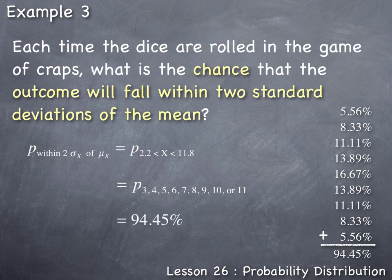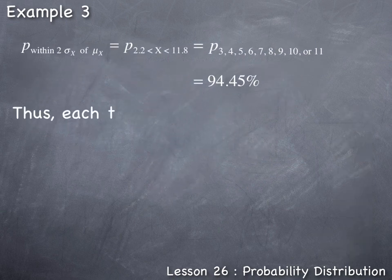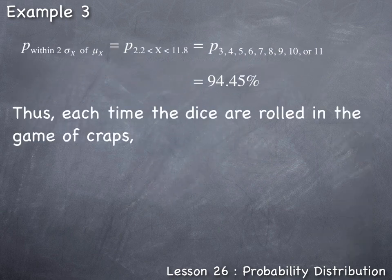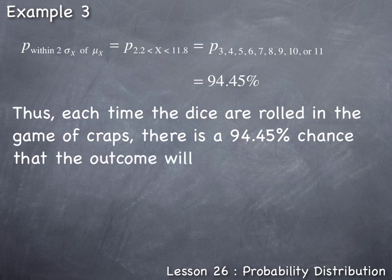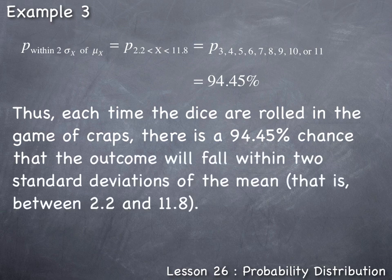Thus, each time the dice are rolled in the game of craps, there is a 94.45% chance that the outcome will fall within two standard deviations of the mean — that is, somewhere between 2.2 and 11.8.